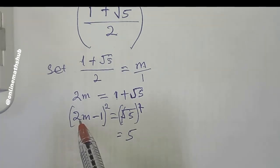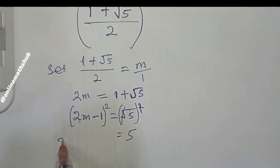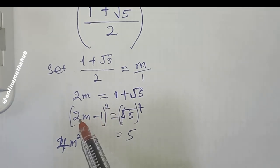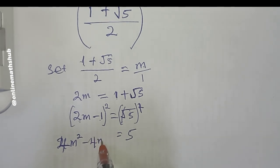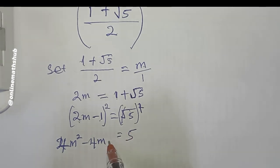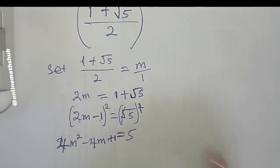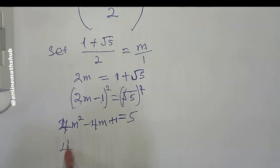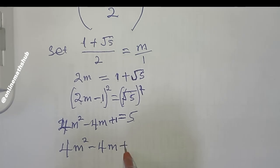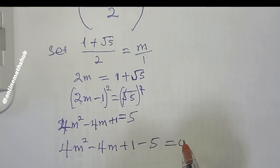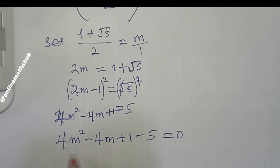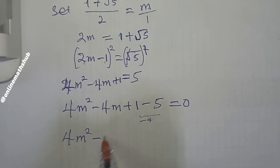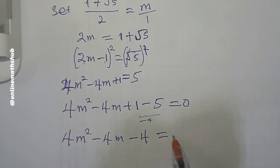Expanding (2m − 1)²: 2m times 2m gives 4m²; 2 times 2m times (−1) gives −4m; and (−1) times (−1) gives +1. So we have 4m² − 4m + 1 = 5. Bringing 5 to the left: 4m² − 4m + 1 − 5 = 0, which simplifies to 4m² − 4m − 4 = 0.